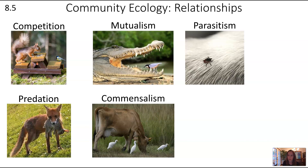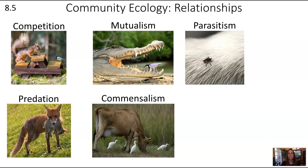Incidentally, both birds and crocodiles are technically reptiles — birds are reptiles, which is fascinating. Parasitism is where an organism lives off of another: in this case, a tick is hoping to burrow into the fur of a mammal and get some blood. That's a fitness disadvantage for the host being parasitized and an advantage to the parasite.